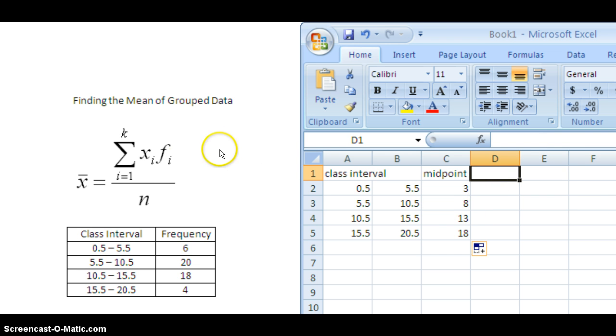Then I have this fi, the frequency. And the frequencies are given in my table of data over here. So I'm just going to retype this information.